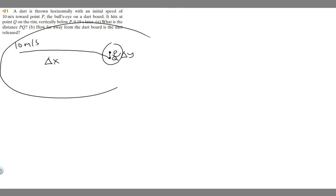So I drew a diagram of what's going on here. We have this dart, we're throwing it, it's going to travel and go down a little bit. It's going to hit point Q, which we know is below the bullseye, which is point P. It's going to travel some distance, released at 10 meters per second.